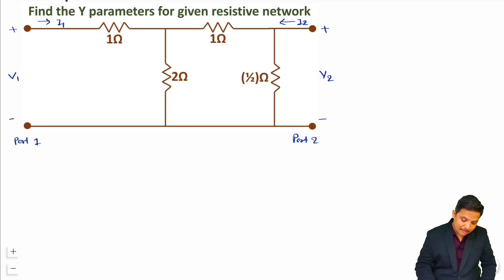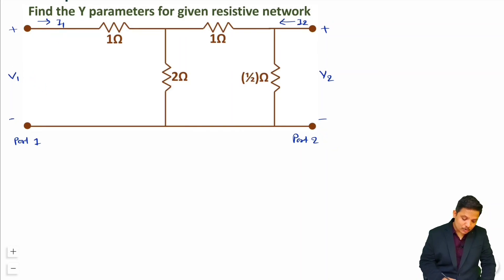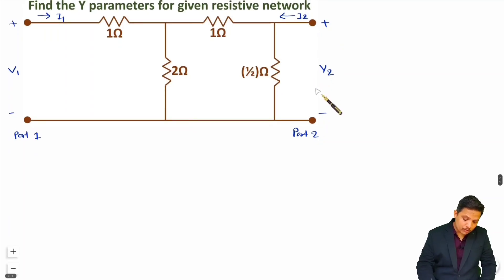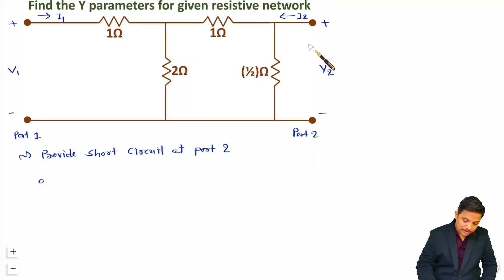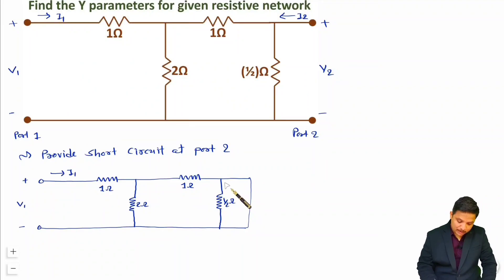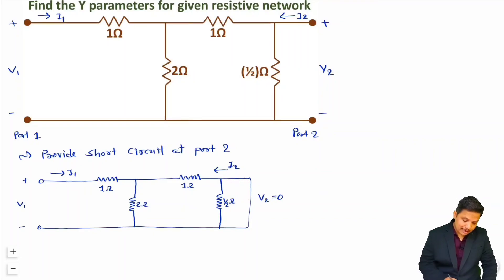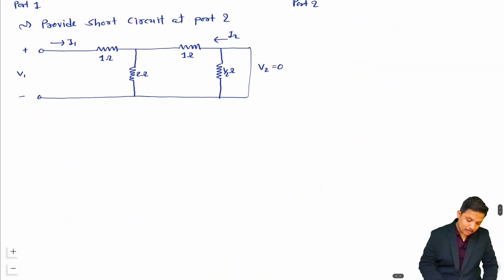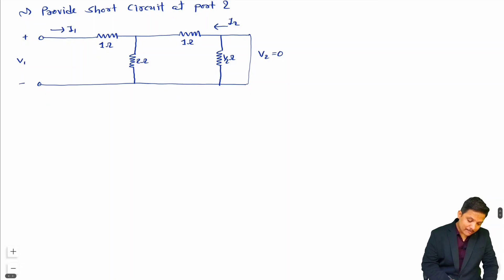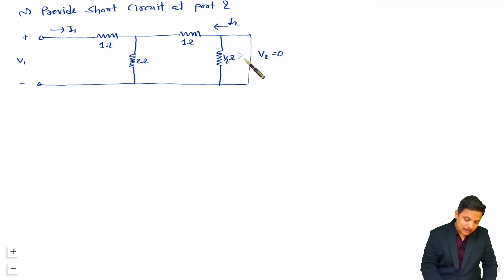For measuring Y parameters, first I'll short circuit port 2 and measure y11 and y12. When you provide a short circuit at port 2, V2 becomes 0, and the current I2 flows accordingly. Let me redraw the circuit with port 2 short circuited to identify y11 and y12.